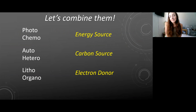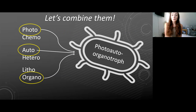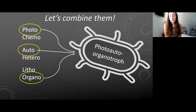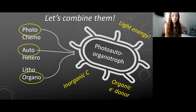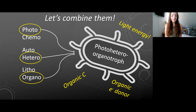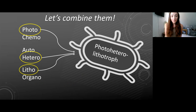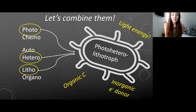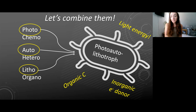Now let's try and combine some of these and see what kinds of organisms we can make. Starting with phototrophs: we can combine photo with auto and organo to get photo-auto-organotrophs — a light energy source, an inorganic carbon source, and an organic electron donor. We can change the auto to hetero to get a photo-hetero-organotroph — a light energy source, an organic carbon source, and an organic electron donor. We can also change organo to litho — a light energy source, an organic carbon source, and an inorganic electron donor. And lastly for phototrophs, photo-auto-lithotrophs have a light energy source, an inorganic carbon source, and an inorganic electron donor.